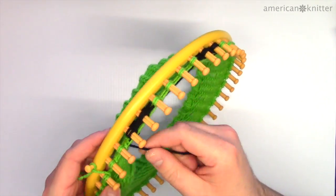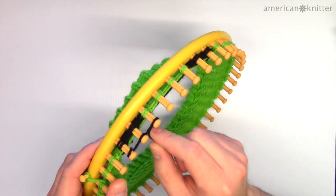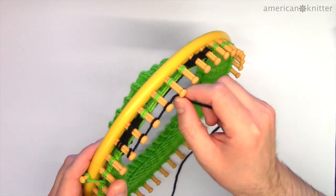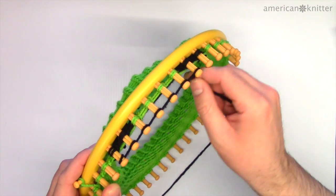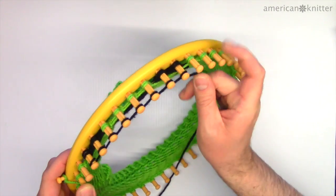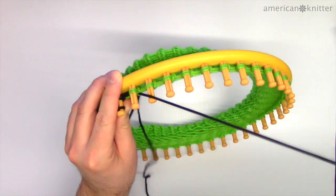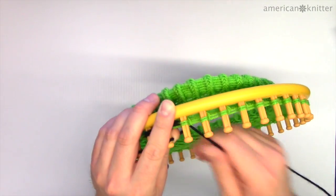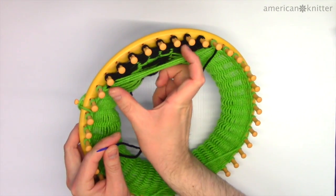Wrap the black yarn on pegs 3 through 10 for 7 rows, remembering to secure the black yarn onto the adjacent green stitches. With the 7 rows added, it's time for the next step.